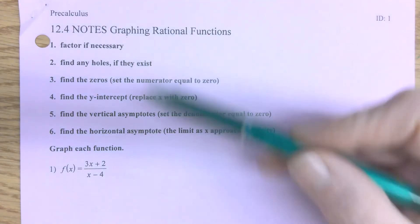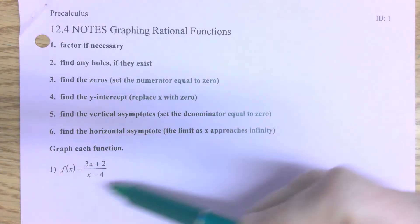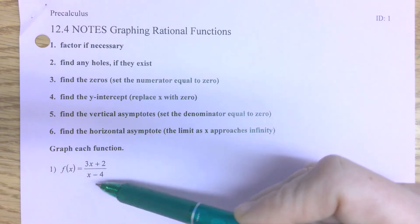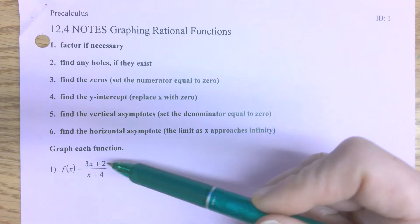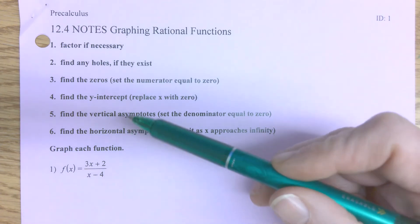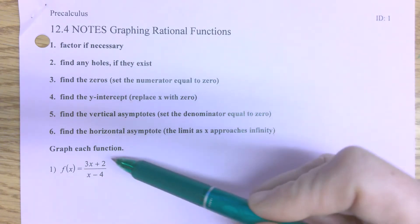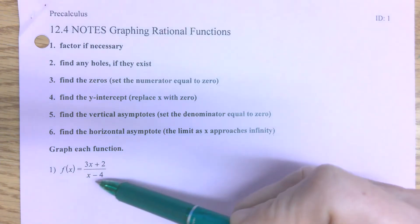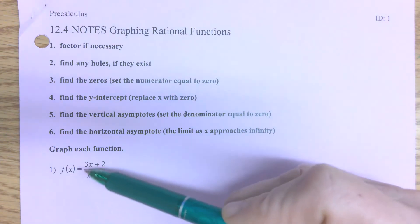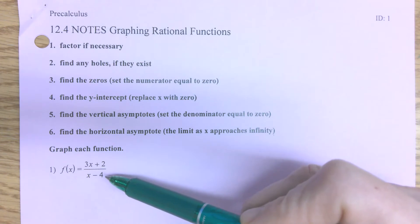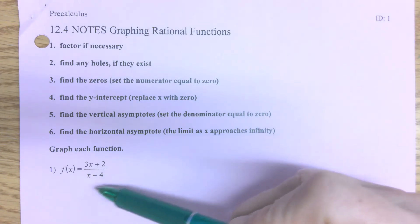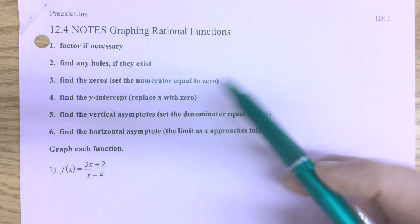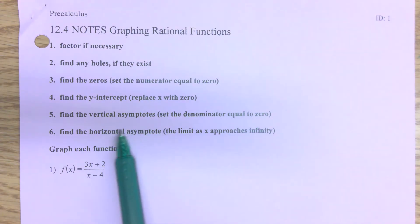Today we're going to be graphing rational functions. Rational functions are any function that looks like a fraction, or anything that can be written as a fraction — that's what a rational number is. Our rational functions have fractions, which give us an issue: there is potentially a spot where the function is undefined, and that undefined area is going to cause a vertical asymptote.